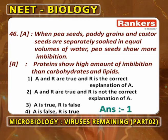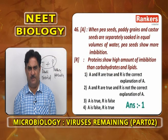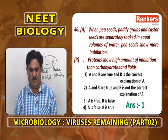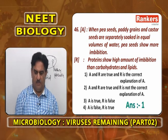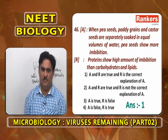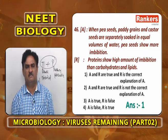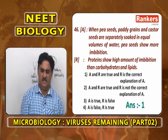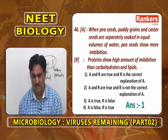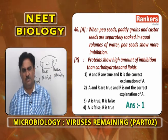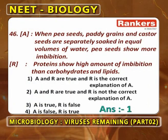Another assertion-reasoning: when pea seeds (Pisum sativum), paddy grains, and castor seeds are separately soaked in equal volumes of water, pea seeds show more imbibition. Reason: Proteins show a high amount of imbibition than carbohydrates and lipids. Pea seeds are proteins, paddy grains are starchy, and castor has lipids. Proteins show maximum imbibition, so pea seeds swell more.